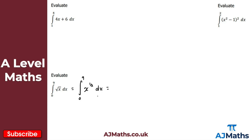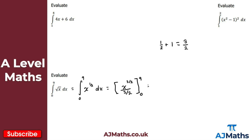Adding 1 to the power of a half gives 3 over 2, since a half plus 1 equals 3 over 2. So we get x to the 3 over 2 divided by 3 over 2. Dividing by 3 over 2 is the same as multiplying by 2 over 3, so this simplifies to 2x to the 3 over 2 all over 3, from 0 to 9.